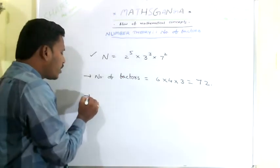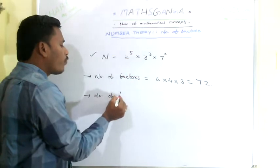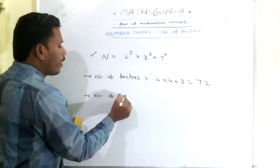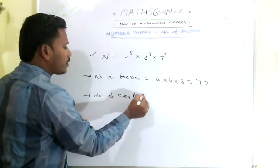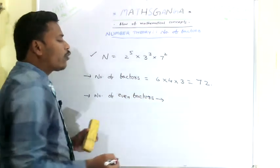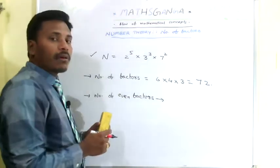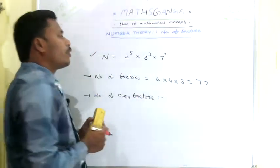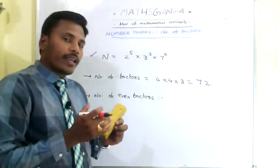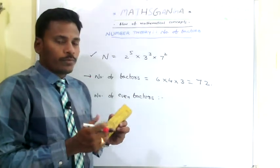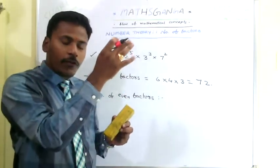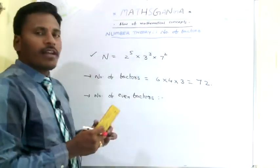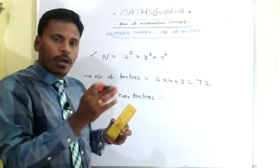Instead of asking the number of factors, if anybody asks you to find the number of even factors, then how can we do it? For even factors, to calculate the even factors, you just express the number n like this: n = 2^5 × 3^3 × 7^2. To get an even factor, surely it involves 2. In the last video, we mentioned the simple way by expressing 2^5 as 1, 2, 2^2, 2^3, and so on.